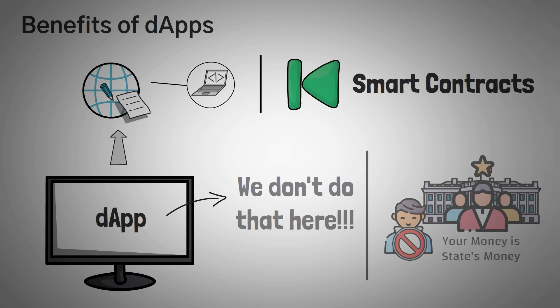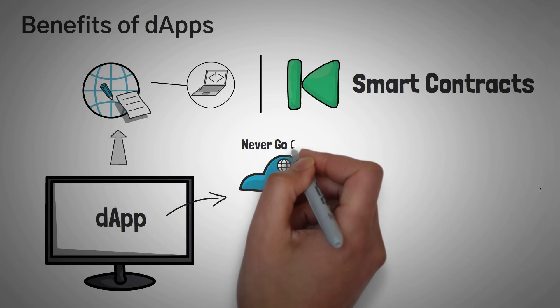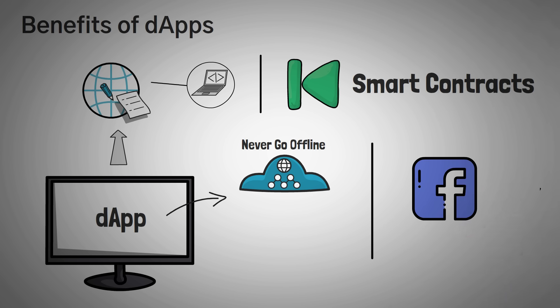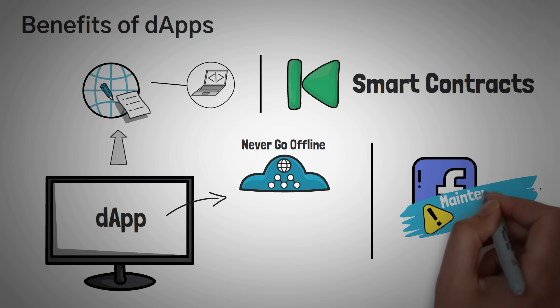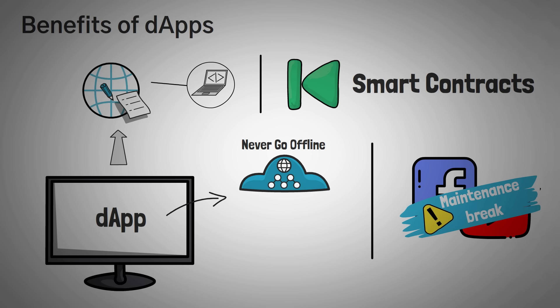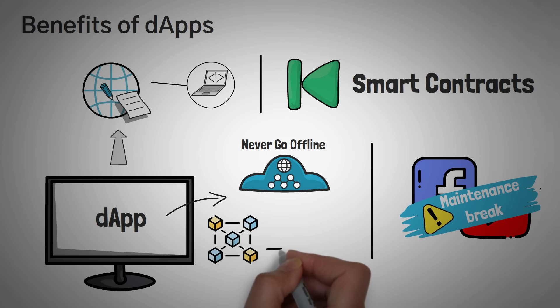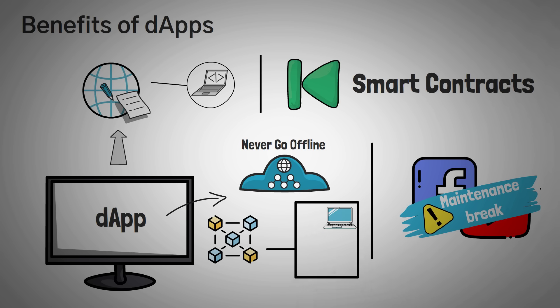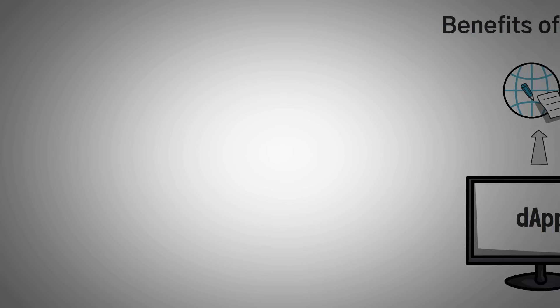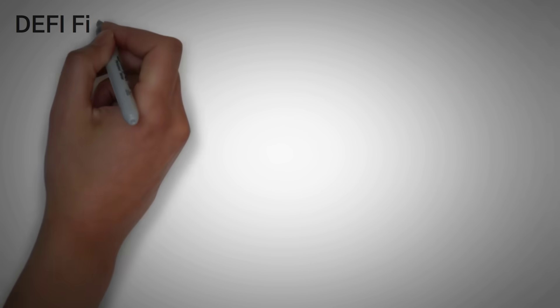Another big benefit of decentralized applications is that they will essentially never go offline. There have been times where Facebook or even YouTube has gone down — maybe their servers have a bug, an outage, or they simply just do not work. Technically, the government could come in and shut them down. But since dApps run on the blockchain, they will actually never go down because they are run by hundreds of thousands of computers all around the world. It would be infeasible, if not impossible, to turn them all off.